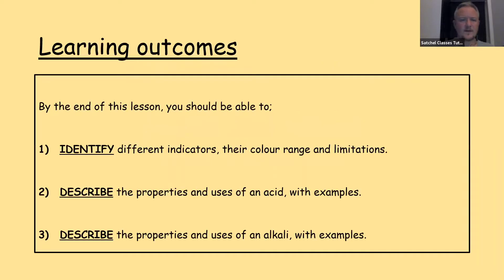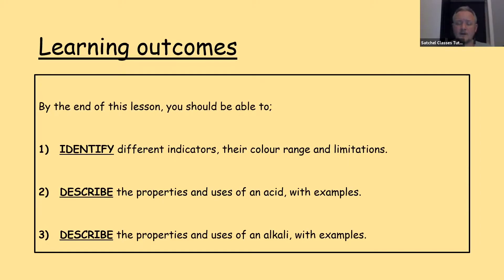By the end of this lesson, you should be able to identify a couple of different types of indicators, what they do, their colour range and limitations. Then describe the properties and uses of an acid with some examples. And finally, describe the properties and uses of an alkali with some examples.